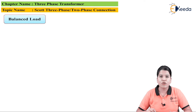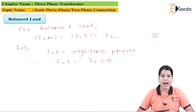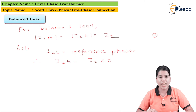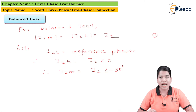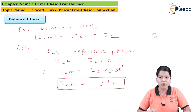Now let us study the balanced load condition. In case of balanced load, I2M equals I2T equals I2. Let us consider I2T as the reference phasor. Hence, I2T equals I2 at an angle of 0 degrees. We know that voltage V2M lags voltage V2T by 90 degrees, so current I2M also lags I2T by 90 degrees. Therefore, I2M equals I2 at an angle of minus 90 degrees. Converting to rectangular form: I2M equals minus j multiplied by I2.